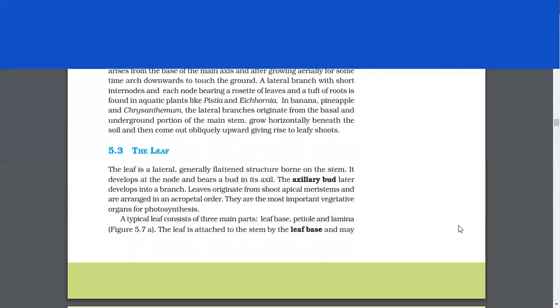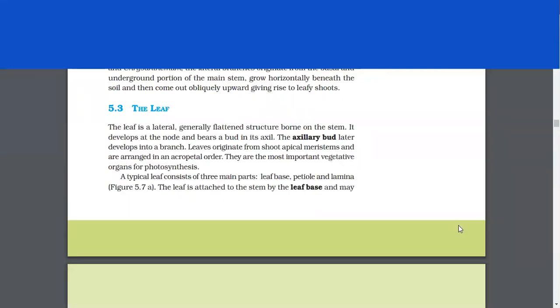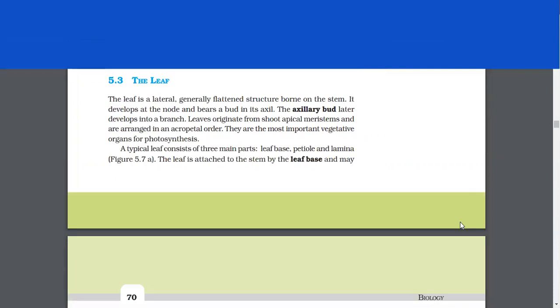The leaf. The leaf is a lateral, generally flattened structure born on the stem. It develops at the node and bears a bud in its axil. The axillary bud later develops into a branch. Leaves originate from shoot apical meristem and are arranged in an acropetal order. They are the most important vegetative organs for photosynthesis.